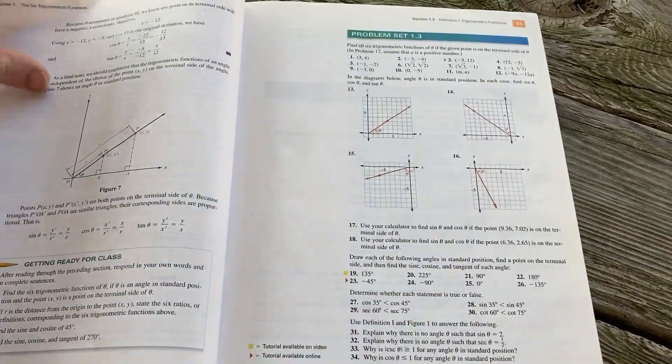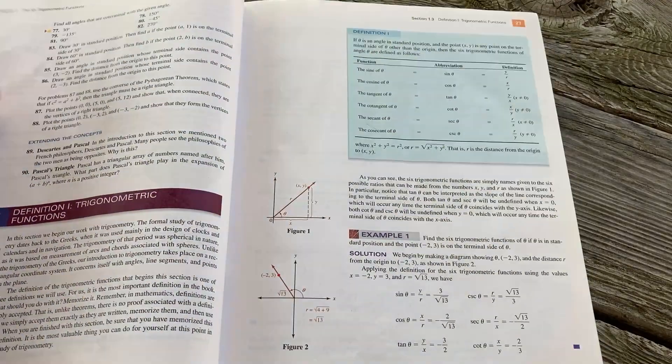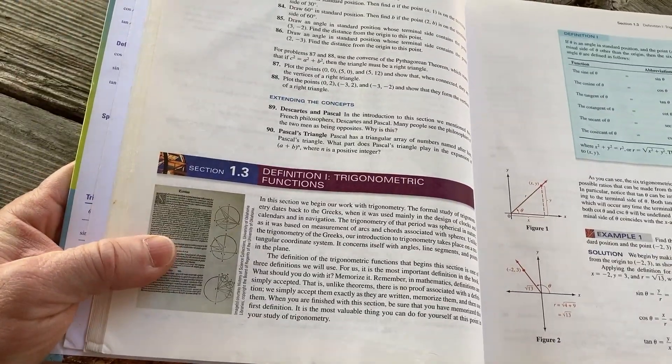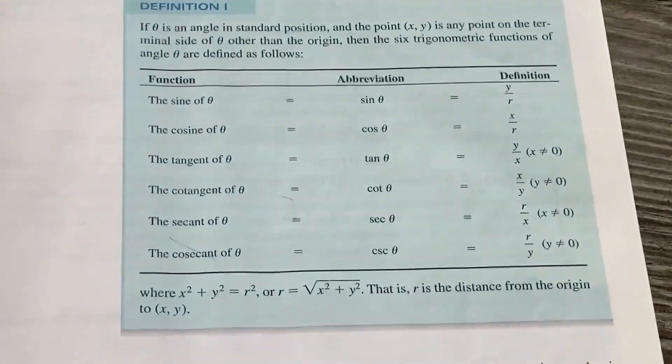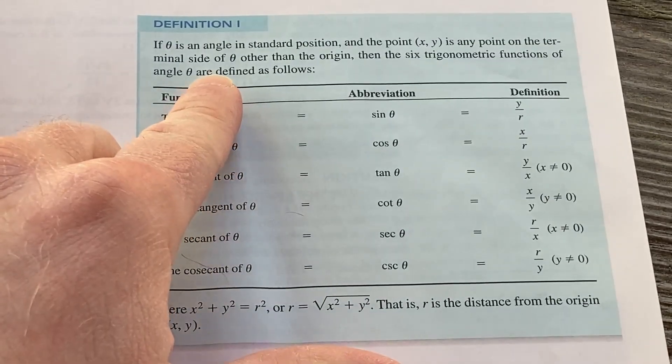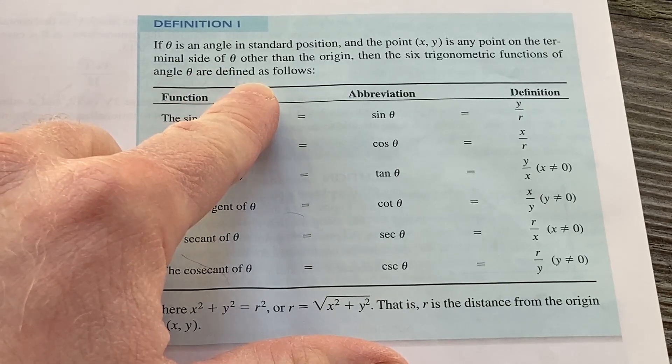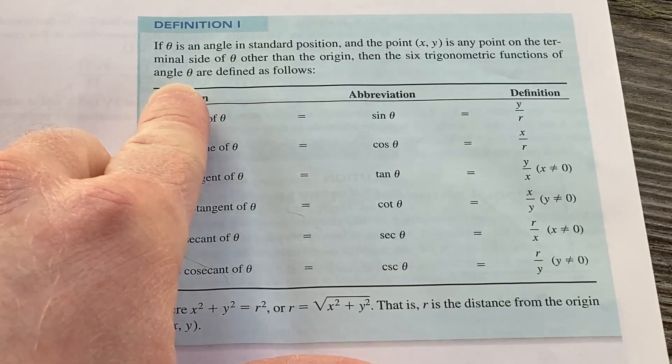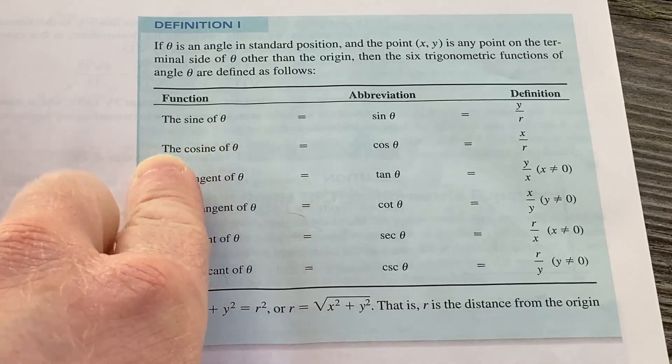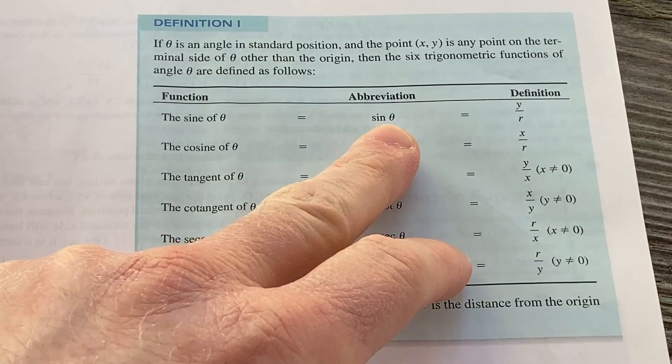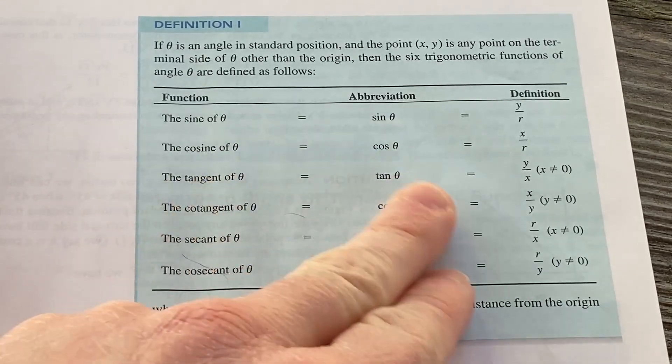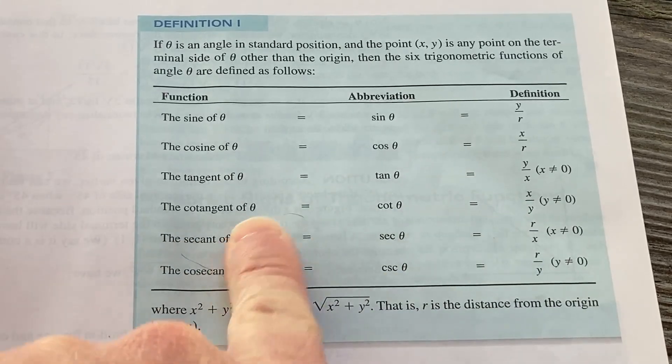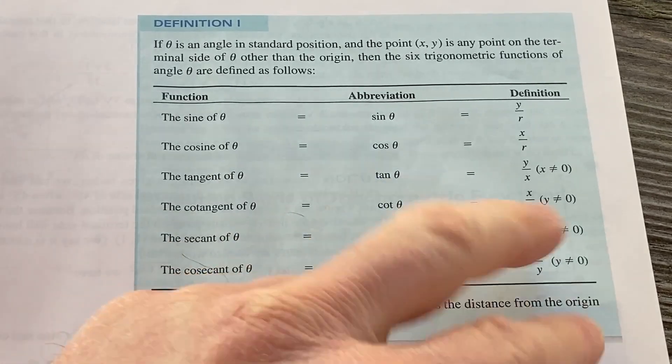Here we go. Let's go back here. Here we've got some trig functions. So definition one: Trigonometric functions. And here is how they define them. It says here, if theta is an angle in standard position, and the point (x, y) is any point on the terminal side of theta other than the origin, then the six trig functions of the angle theta are defined as follows. The sine of theta is y over r. The cosine of theta is x over r. The tangent of theta is y over x, provided that x is not zero. The cotangent is the reciprocal of that, so x over y, provided that y is not zero.